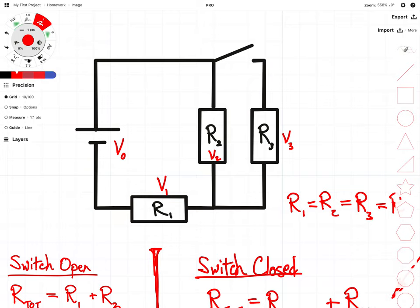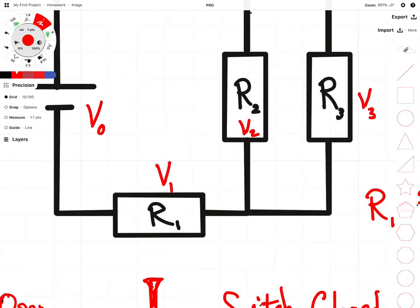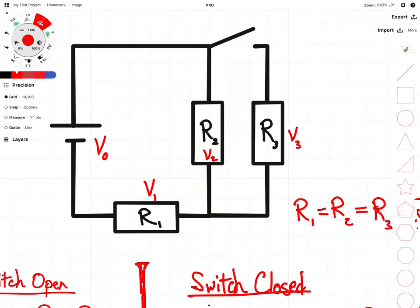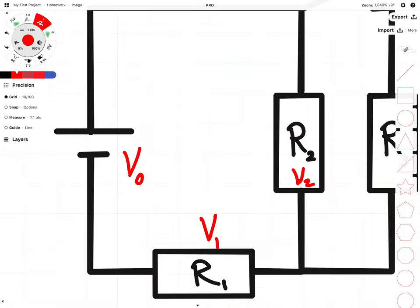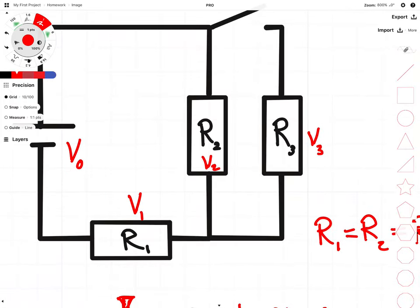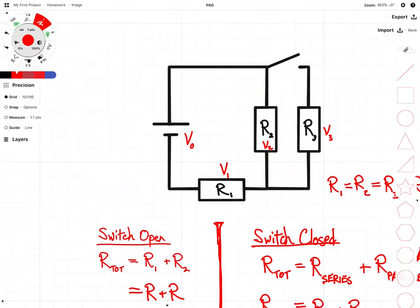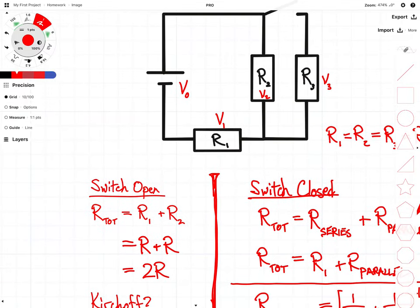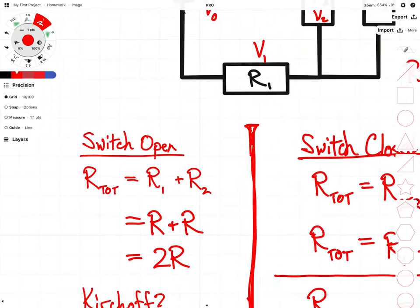You also note that I have written voltages here. I haven't shown voltmeters, but we could do that. So if you were measuring the voltage across each of these components, we would have the voltage of the battery V sub zero and the voltage across our first, second, and third resistors given by V sub one, V sub two, and V sub three.